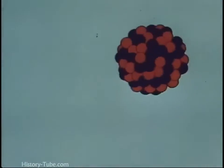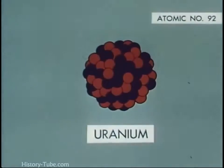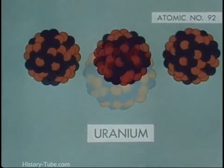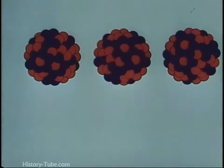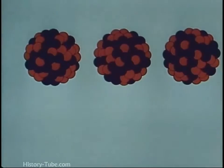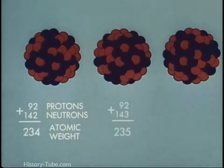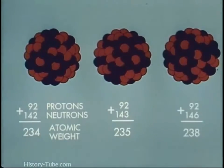At the top of nature's ladder, the most complex atom is uranium, with an atomic number of 92. Natural atomic uranium has three isotopic forms, with atomic weights of 234, 235, and 238.